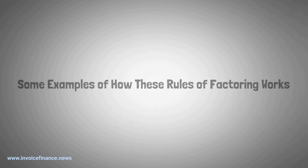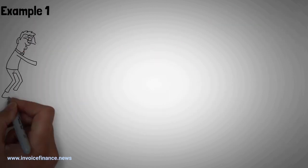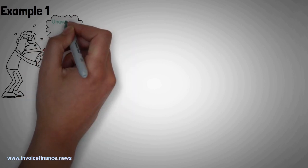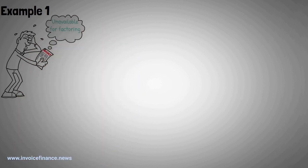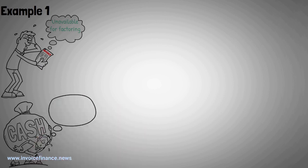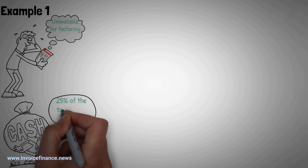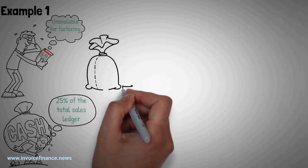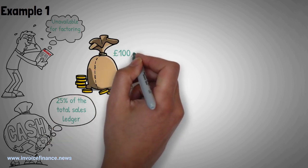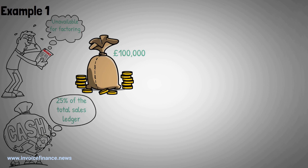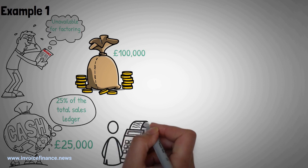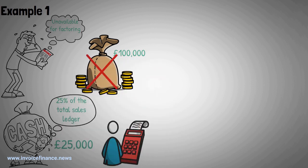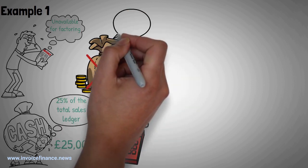Some examples of how these rules of factoring works. Example 1: Exceeding a concentration percentage will lead to an invoice being unavailable for factoring. A factoring facility will place a retention on debtors owing more than 25% of the total sales ledger. Thus, if the total of the sales ledger is £100,000 and one debtor owes £25,000, then until that amount is paid down no further funds will be available for factoring invoices sent to that company in question.